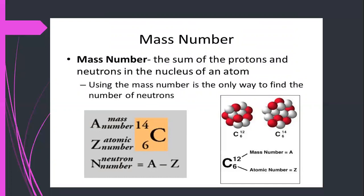For a carbon atom, the atomic number Z is six — it has six protons in its nucleus. The mass number is written as A. We write it like this: at the bottom we write the atomic number and at the top we write the mass number. So if the atomic number is 6 and the mass number is 12, the atomic number gives the number of protons and the mass number is the sum of protons and neutrons.